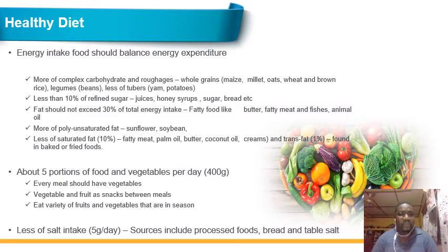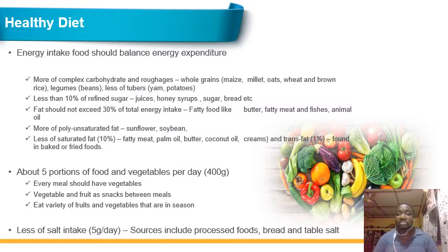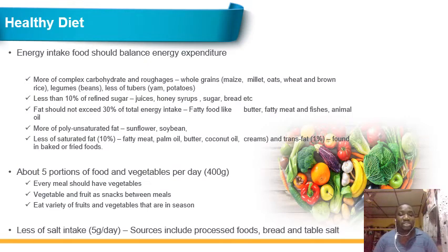More complex carbohydrates and fiber should be taken instead of refined sugar. In terms of complex carbohydrates and fiber, you should take whole grains like maize, millet, oats, wheat, and brown rice. Take more legumes and beans. Take less of tubers like yam and potato. Take less refined sugar in the form of juice, honey, syrup, sugar, and bread.